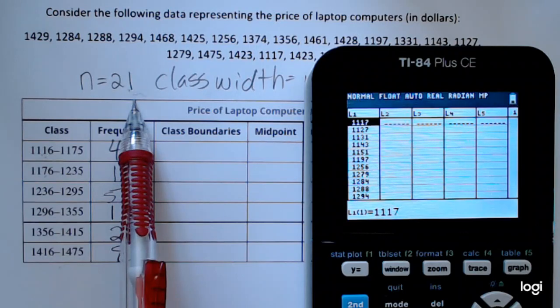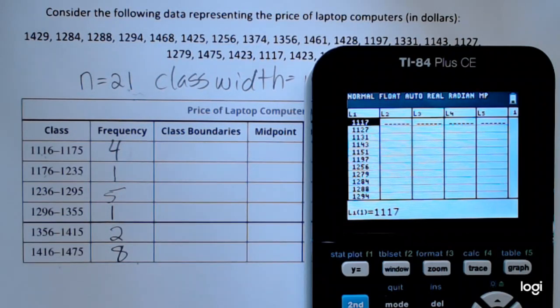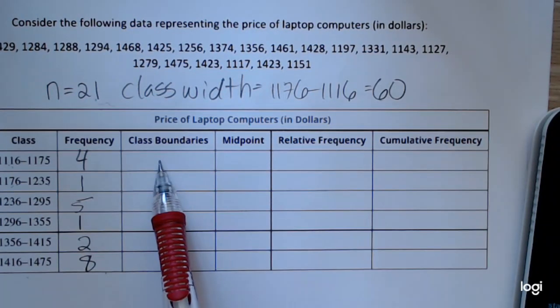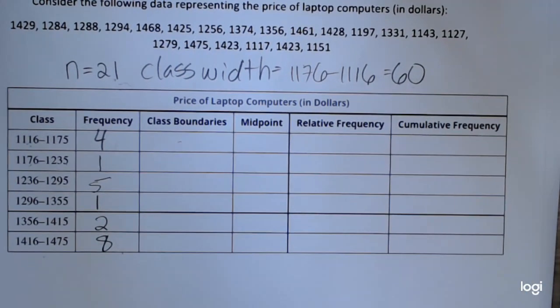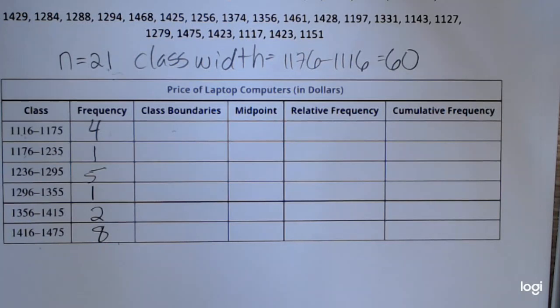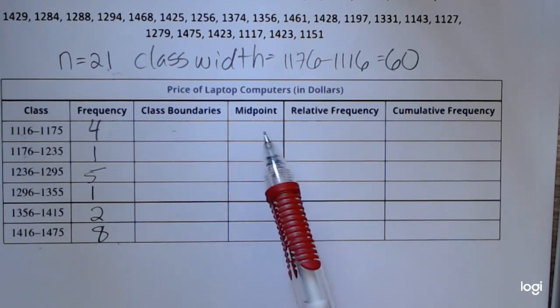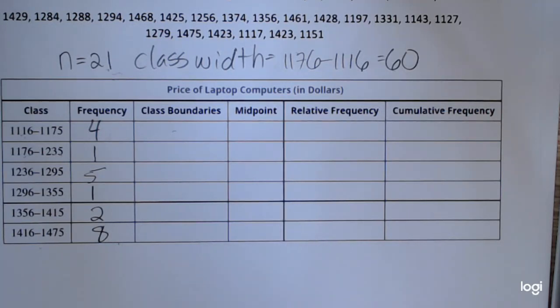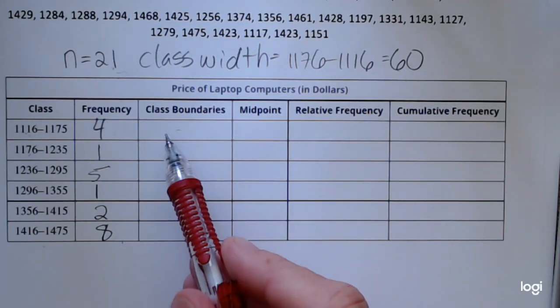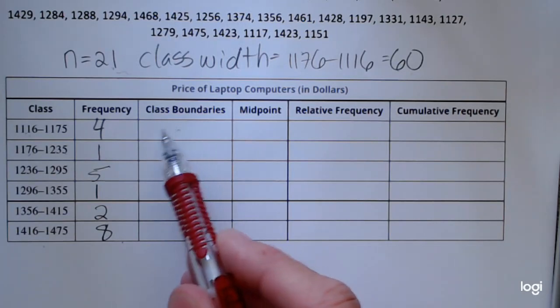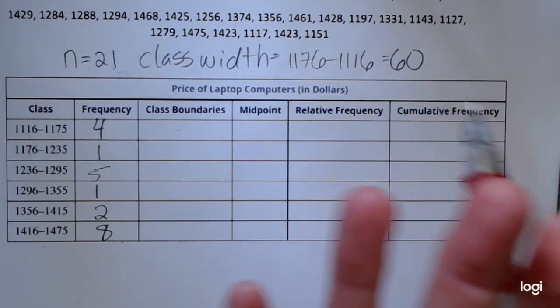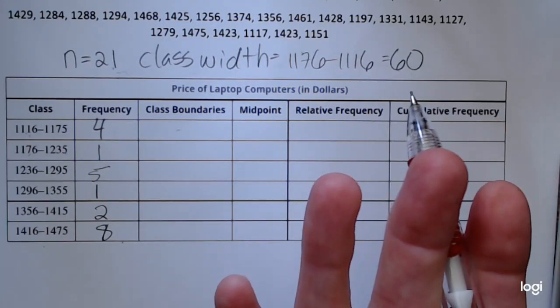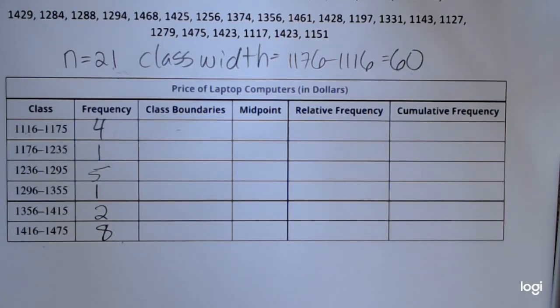Now on to class boundaries. Both class boundaries and midpoints are used if you wanted to create a corresponding histogram from this frequency distribution. So these two columns right here are for the histogram, which I'm not going to do in this video, but I'm just going to show you how to get those started. The class boundaries are created so that the bars of your histogram touch, which just makes it look supposedly nicer.